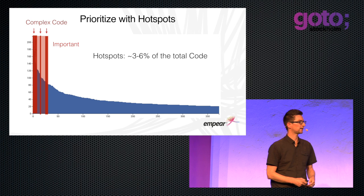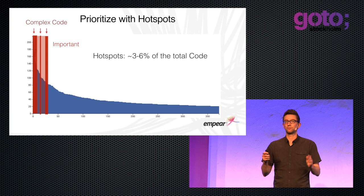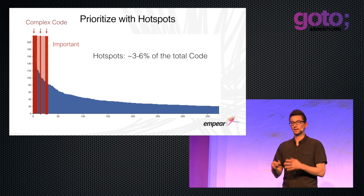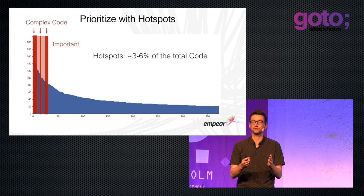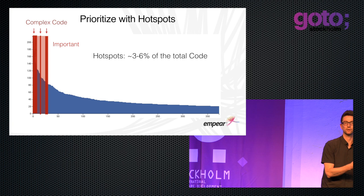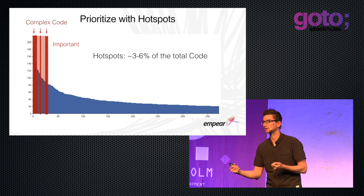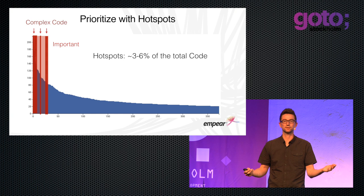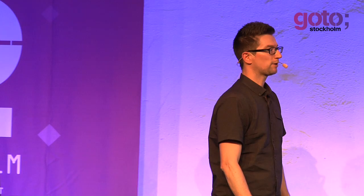When we add a complexity dimension, we're able to narrow down the amount of code we need to investigate even more. I typically find we can narrow down to just three to six percent, depending on the code base. Those three to six percent tell you which part of the code to focus improvements on in order to get gains in both productivity and quality. And hotspots tend to be a strong predictor of defects.